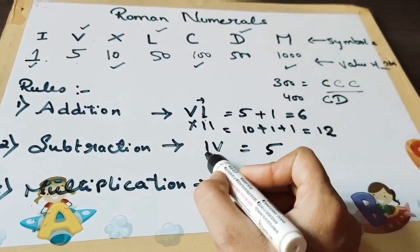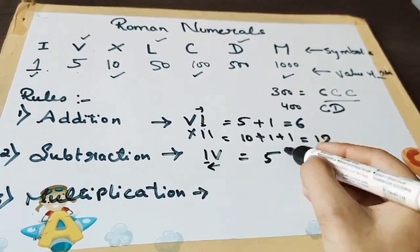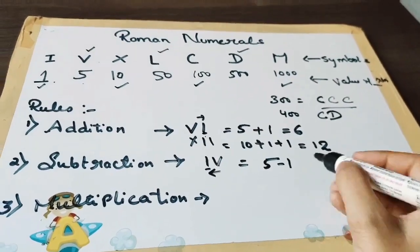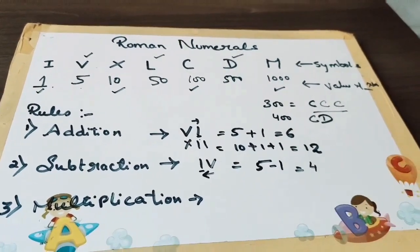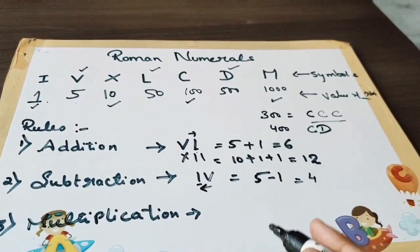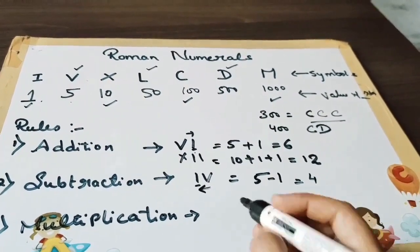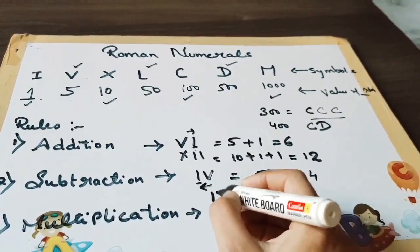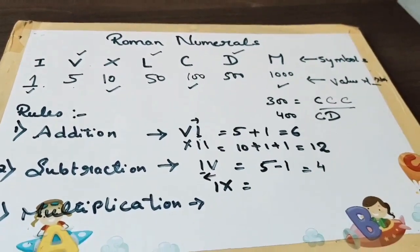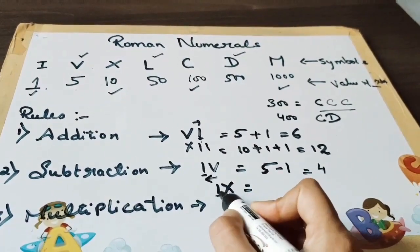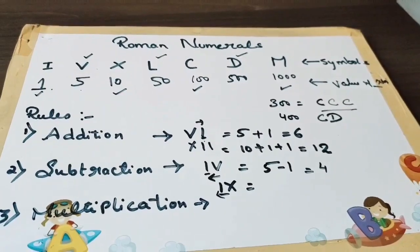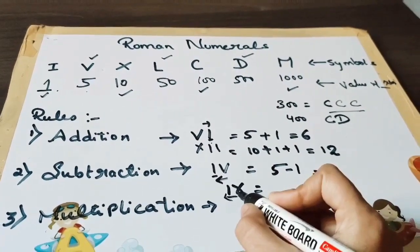5, and when it is on the left side, then we have to subtract, so now the value is 4. And now let's take one more example. Here again this is smaller number with smaller value, so we have to subtract. So value of X is 10 minus 1, that equals to 9.